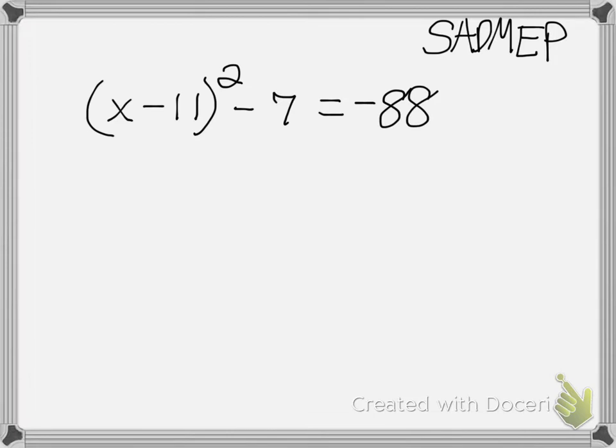So, let's start with S. Is there anything that I can subtract on both sides to get x by itself? Nope. Is there anything I can add on both sides to get x by itself? I sure can. I can add 7 to both sides. And when I do that, I'll bring down my x minus 11 squared equals negative 88 plus 7 gives me negative 81.